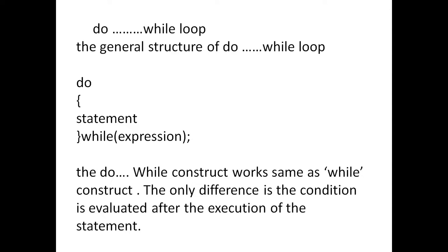Whereas in Do-While Loop, at least one time it will execute the statements. Afterwards it will check the condition. If the condition fails it will come out. That is the only difference between Do-While Loop and While Loop. In Do-While Loop it will execute the statements at least one time, afterwards it will check the condition. If the condition fails it will come out, otherwise it will go on and continue.